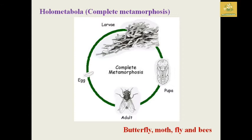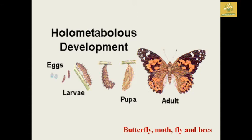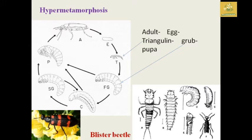Next we are going to see holometabola, which is known as complete metamorphosis, where you can see egg, larva, pupa, and adult stages. Butterfly, moths, flies, and bees are examples of holometabola. The egg is converted to larva, the third stage is pupa, and finally the adult — this is known as complete metamorphosis.